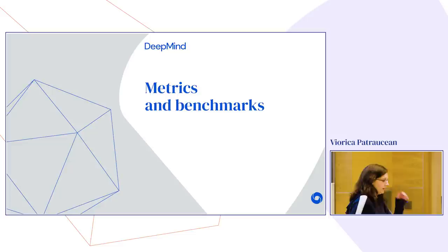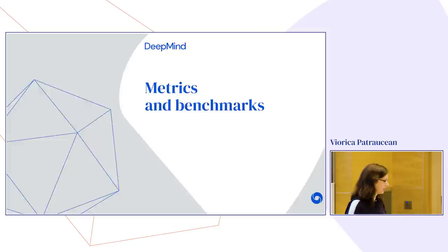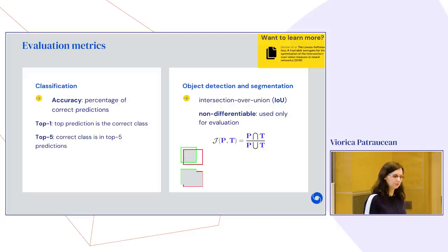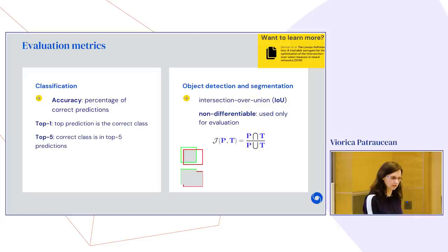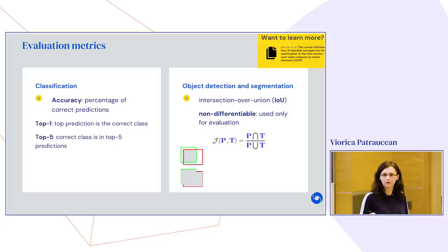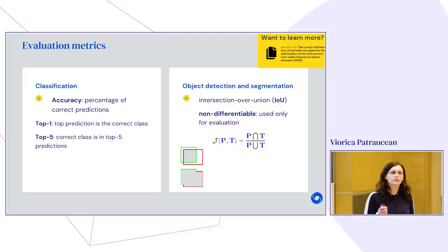How do we evaluate these detectors? In classification, evaluation is easy — we use accuracy, the percentage of correct predictions. We use top-1 (the top prediction must match the correct class) or top-5 (the correct class must be in the top 5 predictions), the latter being useful when some classes are confusingly similar. However, for object detection and semantic segmentation, evaluation is different. We can't directly use the quadratic loss because it's biased against small objects — a 10-pixel error means something very different for a large versus a small object.